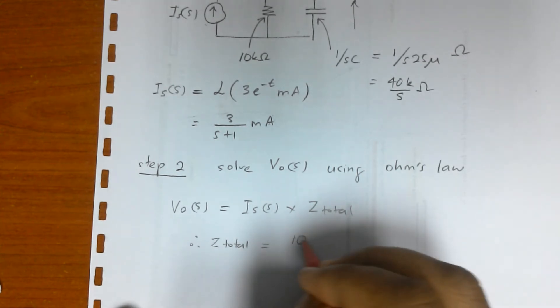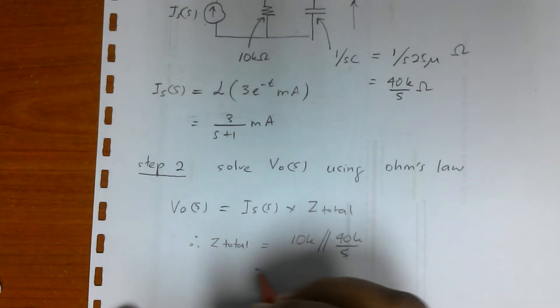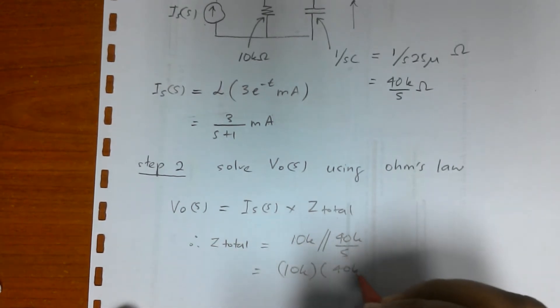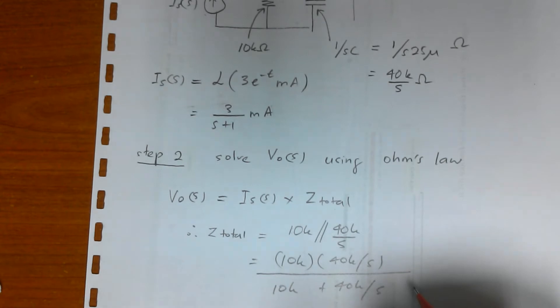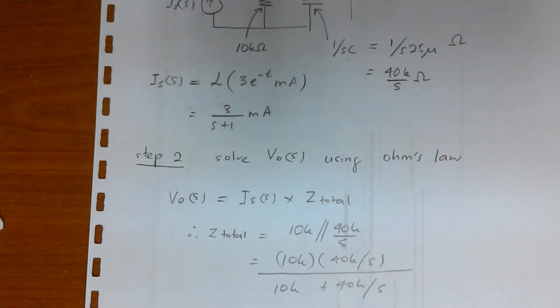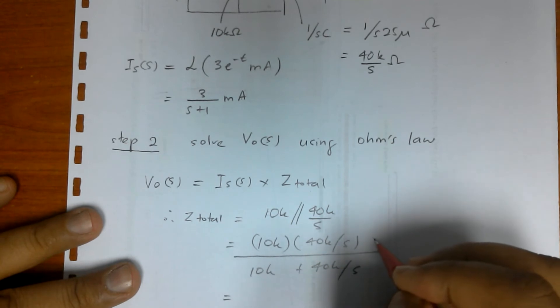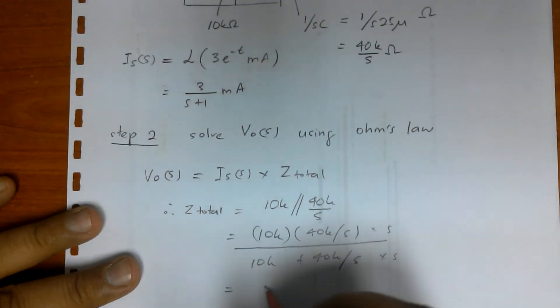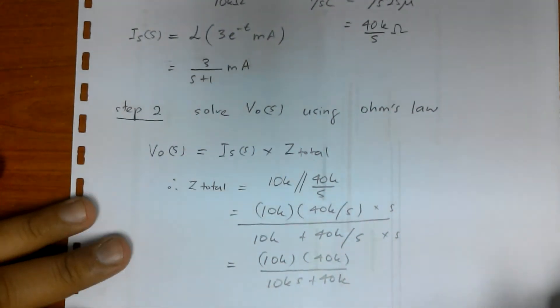Z total is simply using this equation: the 10k in parallel with 40k over S. Then we can solve this. We can multiply with S, multiply with S, we can get 10k times 40k over 10k plus 40k. That's the Z total.